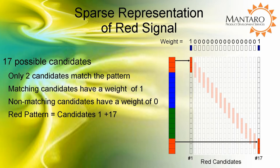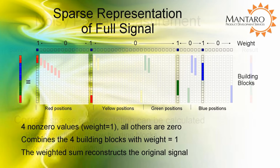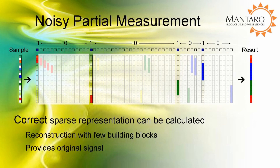This is the sparse representation for the red signal. For the full signal, the sparse representation has four non-zero values and the rest are 0. When combined, we can recreate the original signal. If we take our noisy sample from earlier and compute the sparse representation from this input, the only viable result is the original signal.